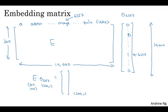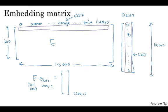And notice that to compute the first element of this vector, of this 300 dimensional vector, what you do is you would multiply the first row of the matrix E with this. But all of these elements are 0 except for element 6257. And so you end up with 0 times this, 0 times this, 0 times this, and so on. And then 1 times whatever this is, and 0 times the rest. And so you end up with the first element as whatever is that element up there under the orange column.